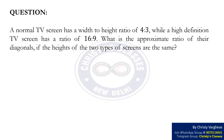Question. A normal TV screen has a width to height ratio of 4 is to 3, while a high definition TV screen has a ratio of 16 is to 9. What is the approximate ratio of their diagonals if the heights of the two types of screens are the same?